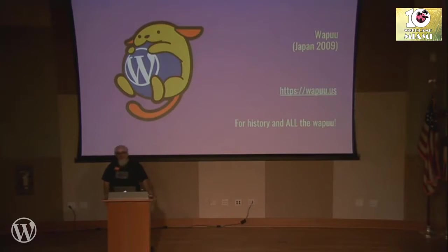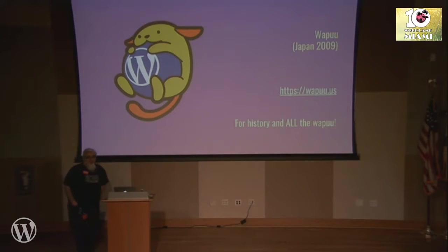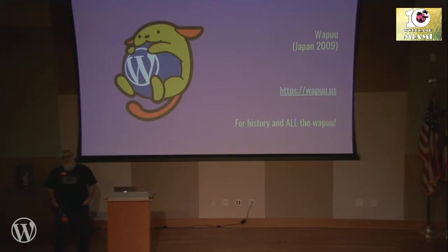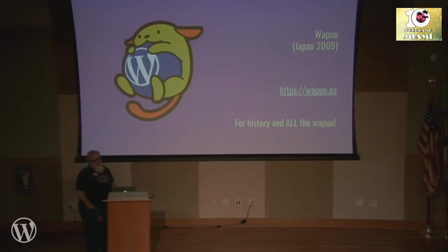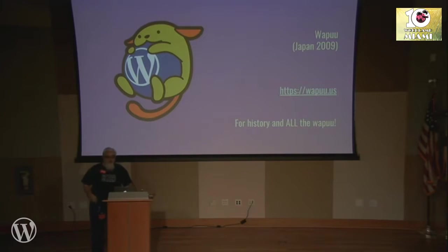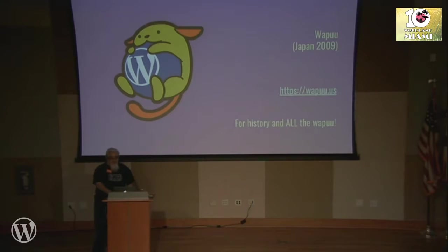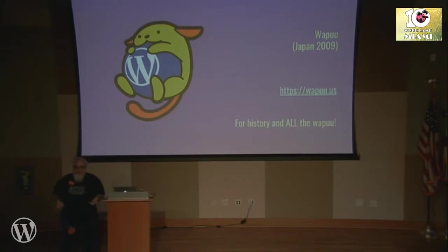This is Wapu. Wapu came into being in 2009 in Japan as a way to help market WordPress to people in Japan. And if you want to find out the history of Wapu and see all the different Wapus, you can go to wapu.us, one of the sponsors here. They've got all the info there. And all the different WordCamps around the world have created — well, most of them have created their own version of Wapu with their own cultural flavor.